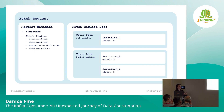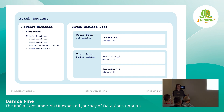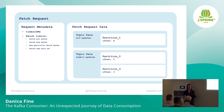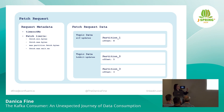If these partitions lived on different brokers, the consumer is just going to issue multiple fetch requests per iteration of its poll loop. It's important to note that there will only ever be at most one request in flight from this consumer per node. There could potentially be multiple requests in flight, but just one per node. The consumer is going to wait for that response back before sending another one to that particular broker.